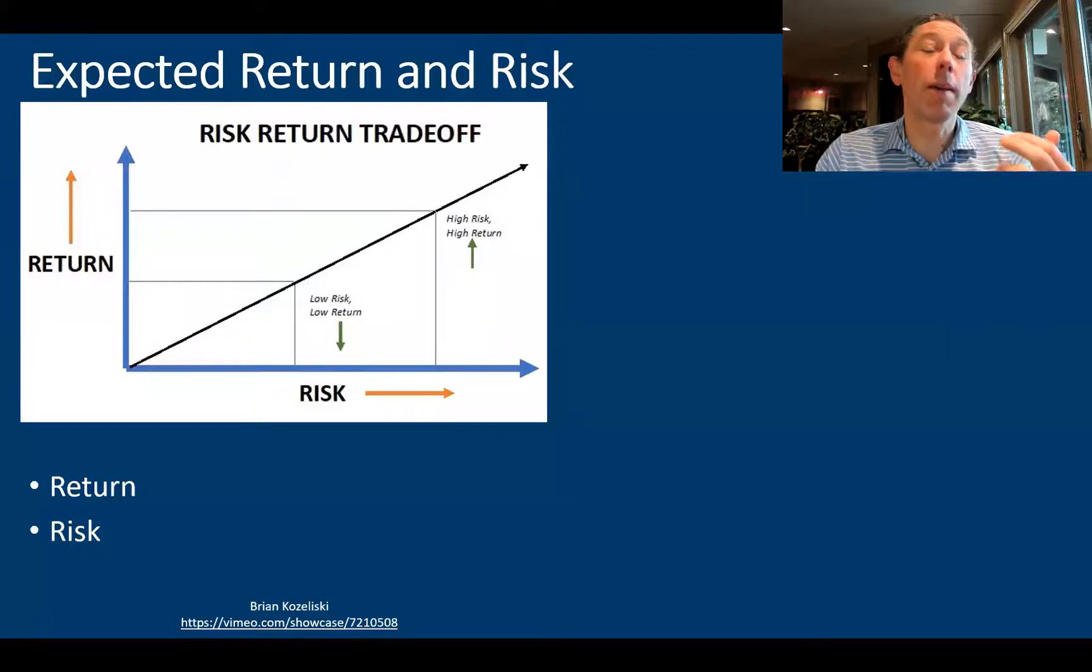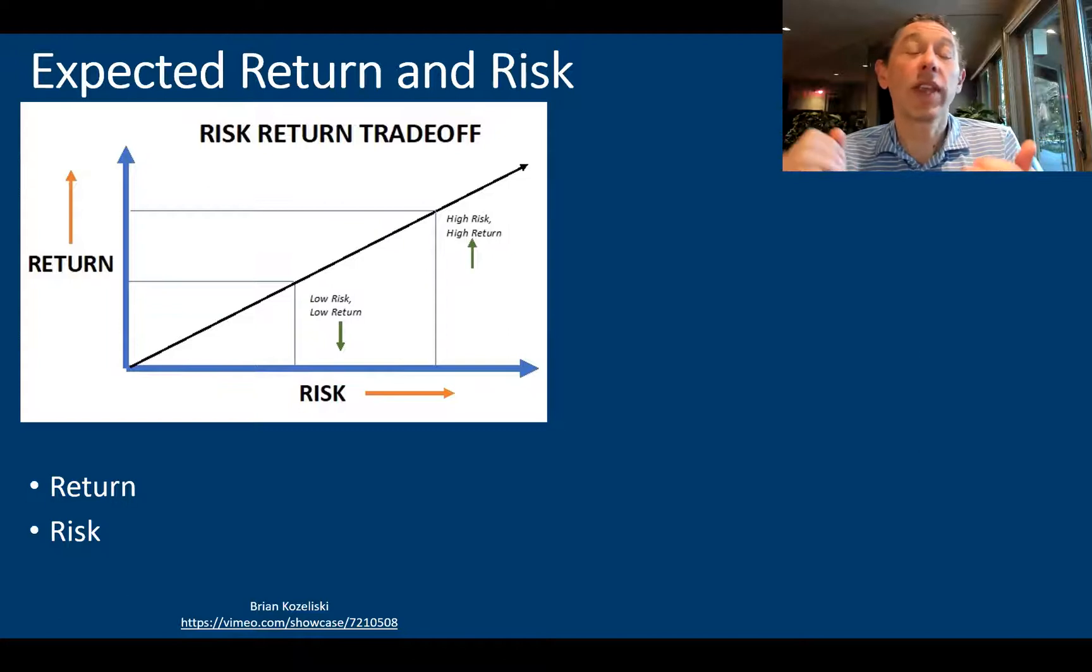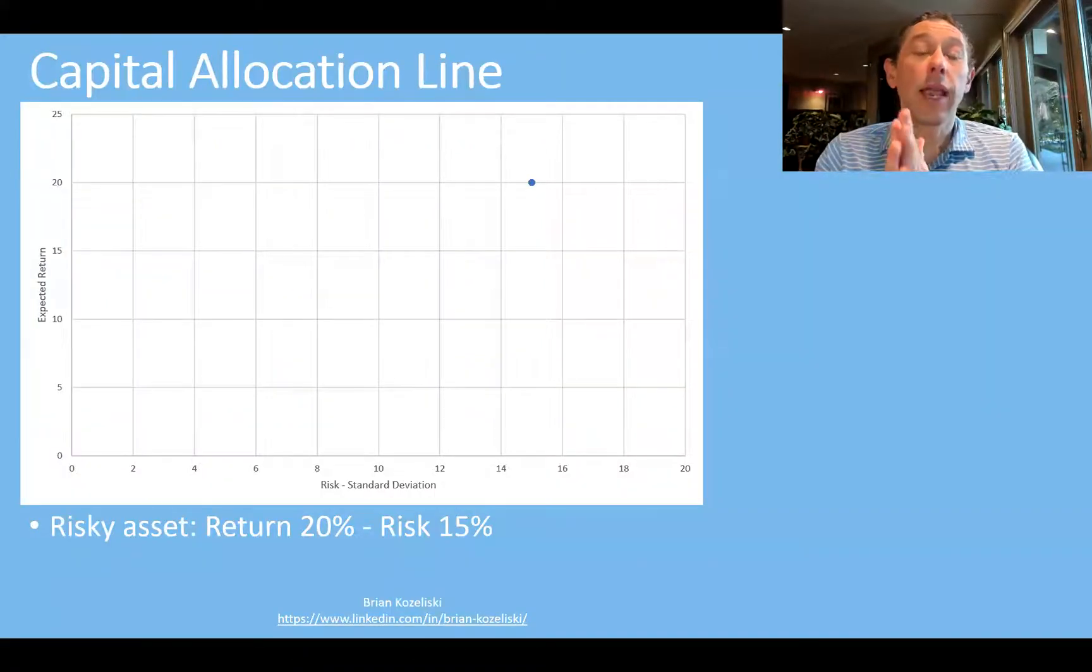Let's first remember that CAPM is all about the risk and return tradeoff, right? So risk is bad, we don't want that, we want less risk. And return is good, we want more return. We'll trade off there in some way such that we'll take on more risk if we get more return. In general, we've been talking about beta. Today, we're going to go back to standard deviation as a measure of risk.